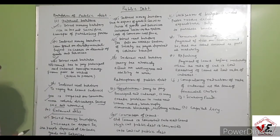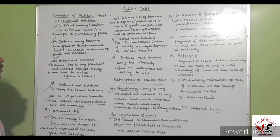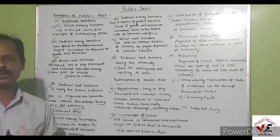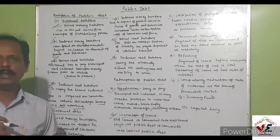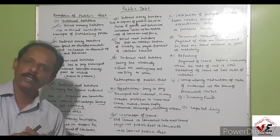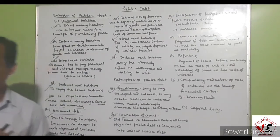So to summarize: the burden of debt includes internal and external burdens, each having four types. The redemption of public debt has been covered through various methods. I hope you understand this properly — and that is all for today.